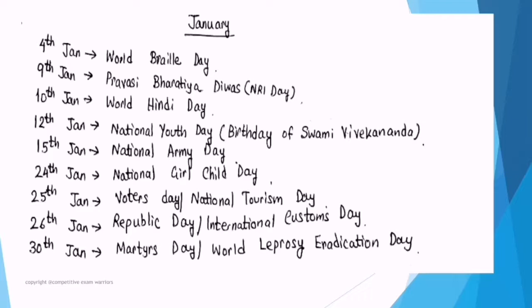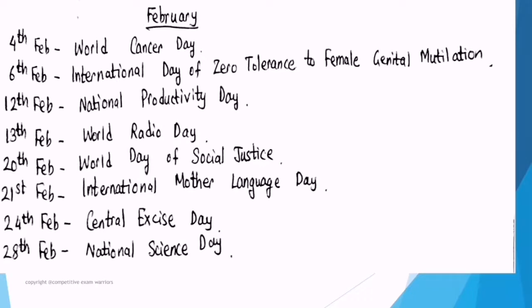January important dates: 4th January — World Braille Day. 9th January — Pravasi Bharatiya Divas (NRI Day). 10th January — World Hindi Day. 12th January — National Youth Day, on account of the birthday of Swami Vivekananda. 15th January — National Army Day. 24th January — National Girl Child Day. 25th January — Voters Day and National Tourism Day. 26th January — Republic Day and International Customs Day. 30th January — Martyrs' Day or World Leprosy Eradication Day.